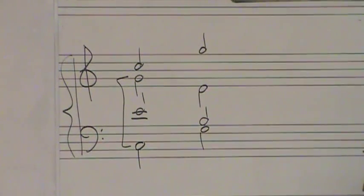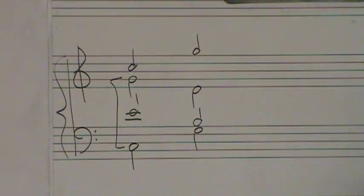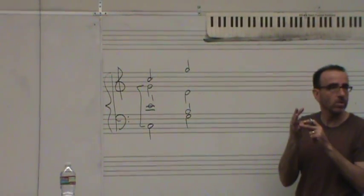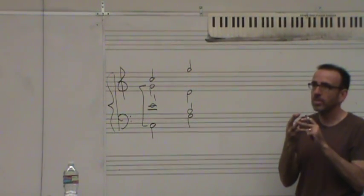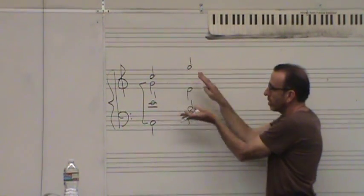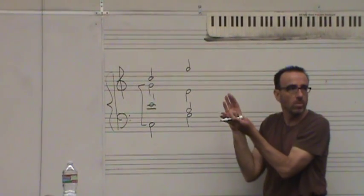In the book, they call that parallel fifths by contrary motion, or they call them consecutive fifths. And that, I think, is a better term, consecutive fifths. So actually, you want to avoid consecutive octaves in the same two voices, or consecutive fifths in the same two voices, whether they move with each other or in contrary motion to each other.